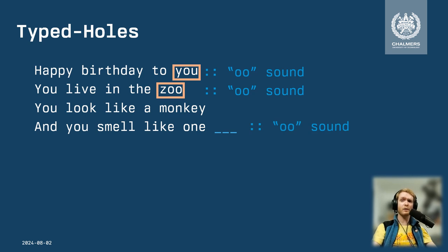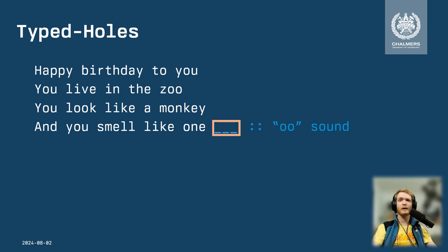The type of this hole is the 'oo' sound, so we're saying that whatever we put in here should have an 'oo' sound. This allows us to focus our program repair on this specific part, and in the meantime, we kind of forget about the rest of the program.